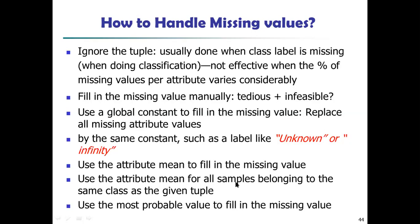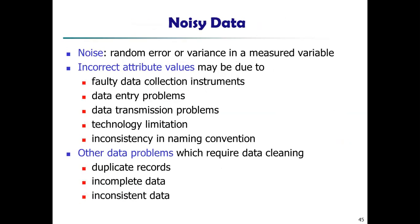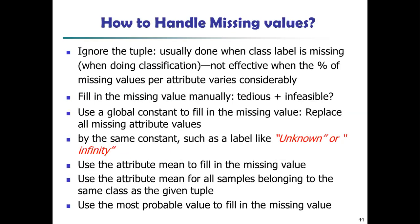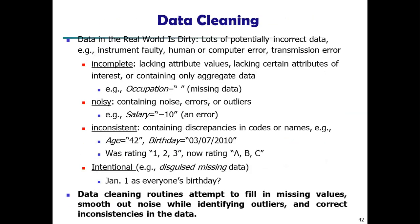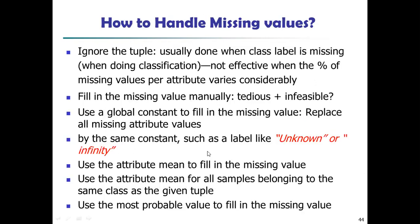Use the same attribute mean for all samples available and replace missing values with that mean. Sixth: use the most probable value to fill in the missing values — using other customer attributes in the dataset, we can fill particular data values by using methods such as decision trees.